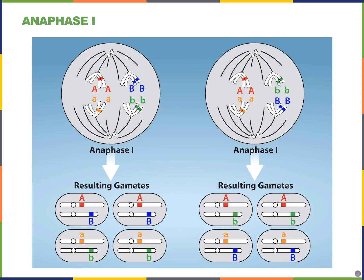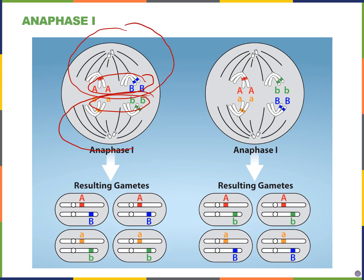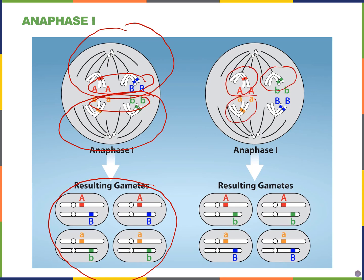The book also shows resulting gametes that may arise from independent assortment. If capital letters are dad's chromosomes and lowercase letters are mom's, one cell ends up with all of dad's and one with all of mom's. When they split again for meiosis II, we get four gametes. On the right, there's a combination of dad and mom in one cell and mom and dad in the other — showing the gametes after both meiosis I and meiosis II are completed.